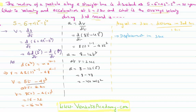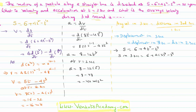The displacement in the third second equals displacement in total 3 seconds minus displacement in total 2 seconds. The equation for displacement is S = 6 + 4t² − t⁴. So S at t = 3 seconds is 6 + 4×9 − 81 = 6 + 36 − 81 = −39 meters.